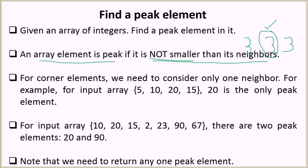So now we will take some time to understand the problem, then we will go on to the solutions. For the corner elements, we will need to consider only one neighbor, which makes sense because corner elements have only one neighbor. For the first element, we will only check the right neighbor, and for the last element, we will only check the left neighbor.